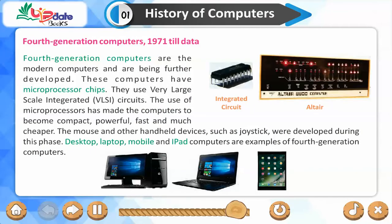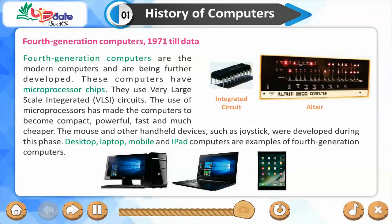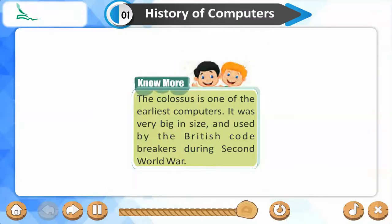Fourth-generation computers (1971 to present) are the modern computers and are being further developed. These computers have microprocessor chips and use very large-scale integrated (VLSI) circuits. The use of microprocessors has made computers compact, powerful, fast, and much cheaper. The mouse and other handheld devices such as the joystick were developed during this phase. Desktop, laptop, mobile, and iPad computers are examples of fourth-generation computers. The Colossus is one of the earliest computers — it was very big in size and was used by British codebreakers during the Second World War.